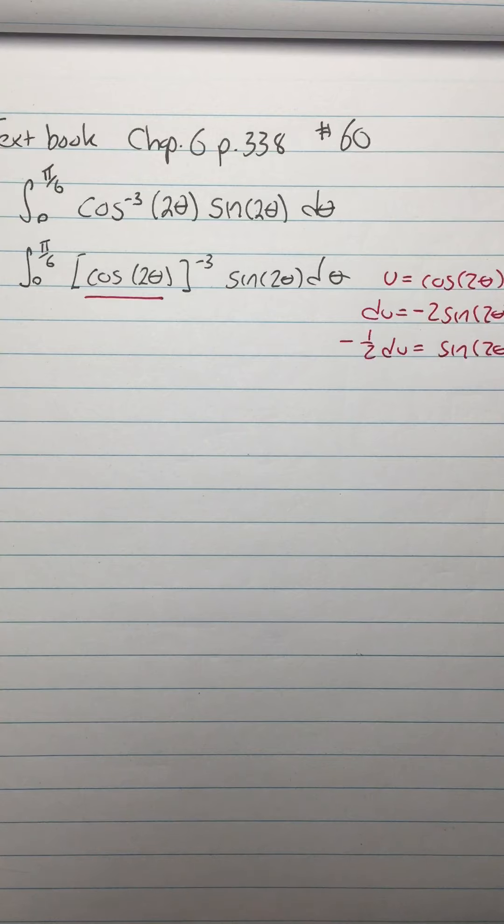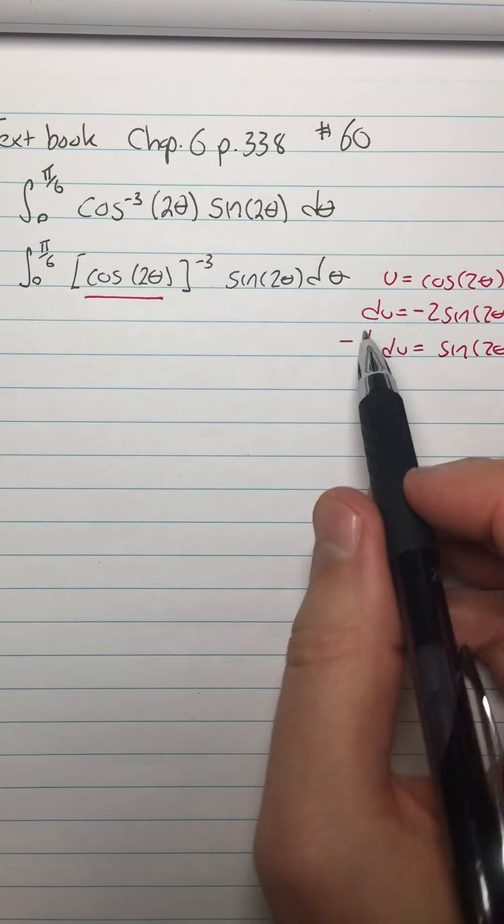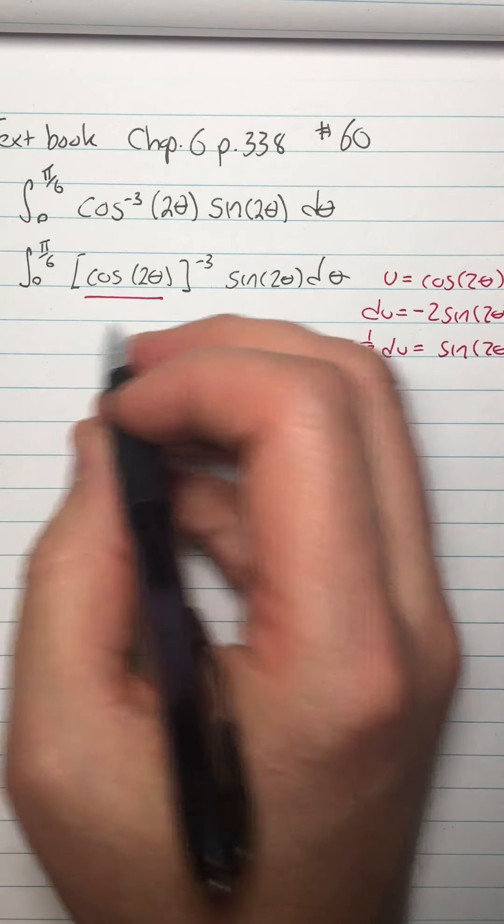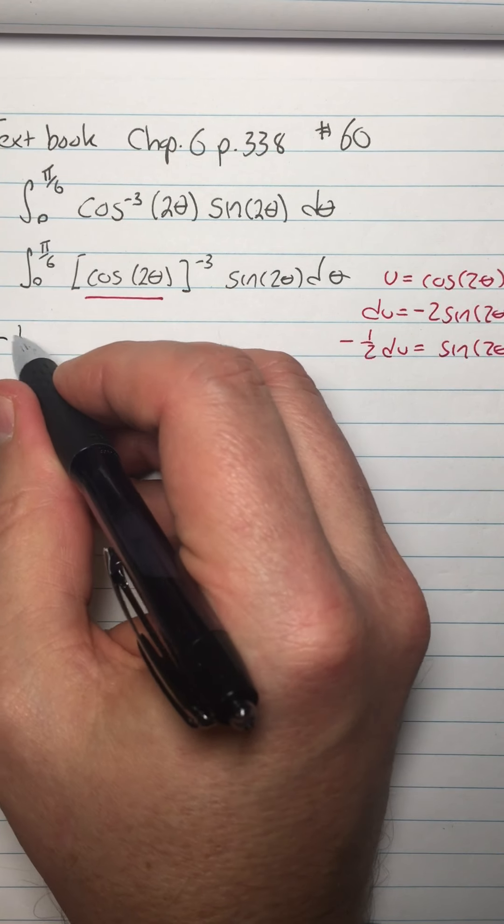All right, so that means that my sine of 2 theta we're going to replace with negative 1 half du, so I'm going to start doing that and putting that negative 1 half out here. I'm going to do integral.